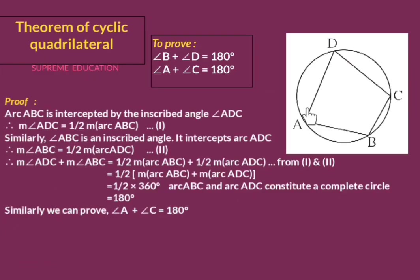Now look at the figure. Arc ABC is intercepted by inscribed angle ADC. We learned the inscribed angle theorem in a previous video: the measure of an inscribed angle is half the measure of the arc intercepted by it. Since inscribed angle ADC intercepts arc ABC, therefore major angle ADC equals half of major arc ABC. This is statement number one.